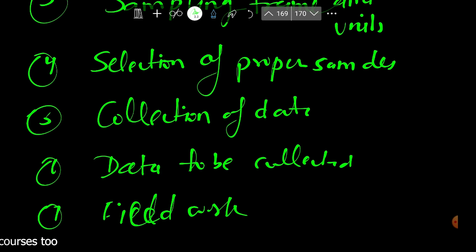The seventh step is fieldwork organization. The employees and supervising workers must be well trained in locating the sampling units, because trained workers will be able to obtain proper and adequate information as required.